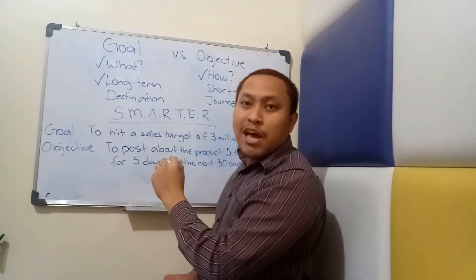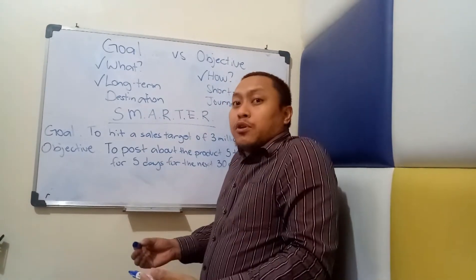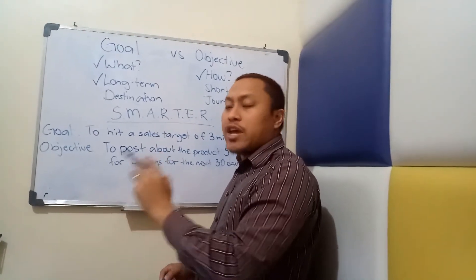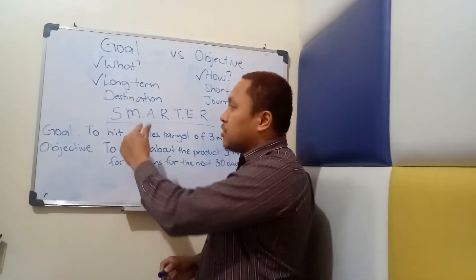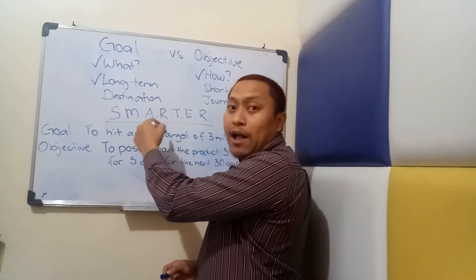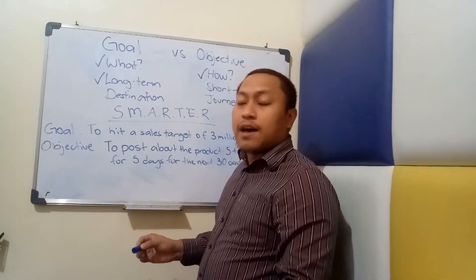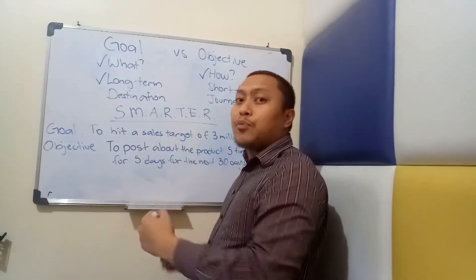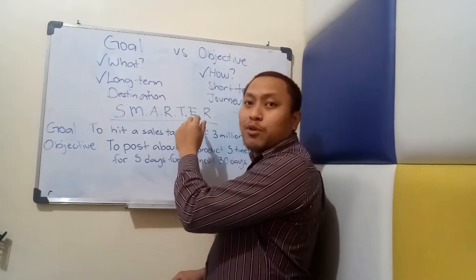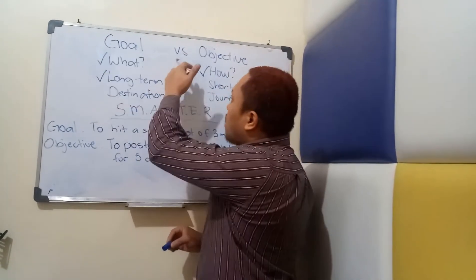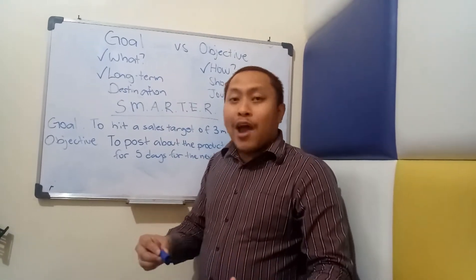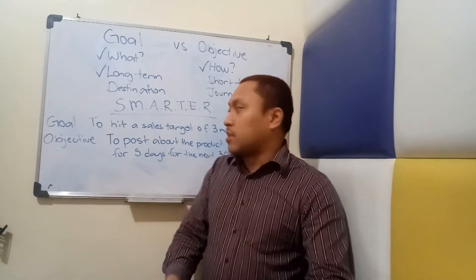S means Specific. M means Measurable. A means Attainable or Achievable. R is Relevant — not Realistic anymore, because when you think about it, 'realistic' is synonymous to 'attainable or achievable,' so to avoid redundancy with A, it has been changed to Relevant. T stands for Timely, time-bound, or there must be a time frame. E means it has to be Evaluable, meaning you have to be able to monitor, track, and evaluate it from time to time. And of course it has to be Recorded — plans, goals, and objectives have to be recorded so you always have a visual reference to get back to when checking where you're at in the implementation of your objectives.